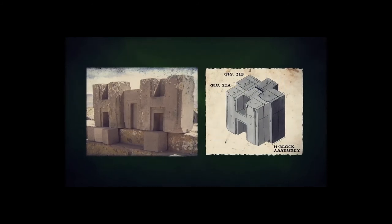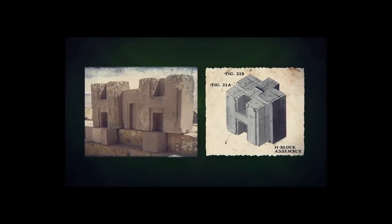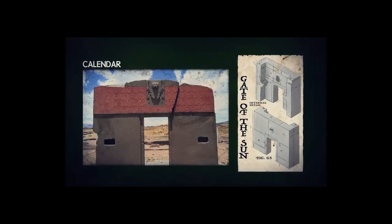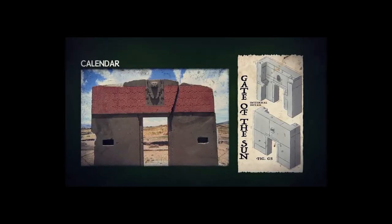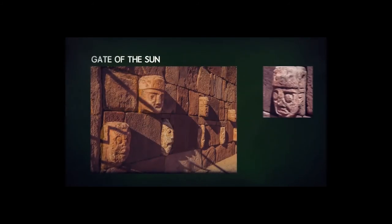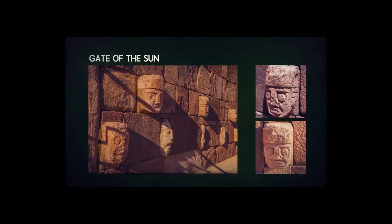For example, there are H-blocks that interlock in a detailed and sophisticated manner that require no mortar. On site, there is also a calendar that some believe dates millions of years back and made by visitors from outer space. For good measure, near Tiwanaku's Gate of the Sun is a wall decorated with heads that some believe could be aliens.